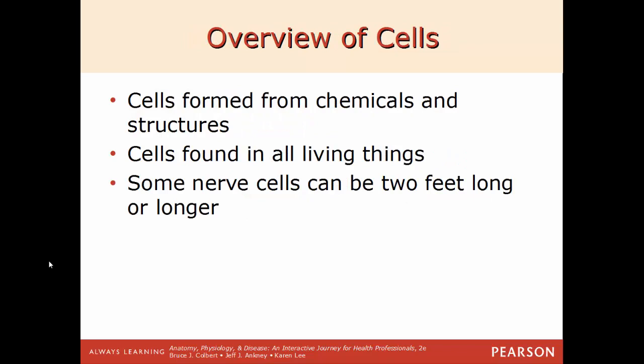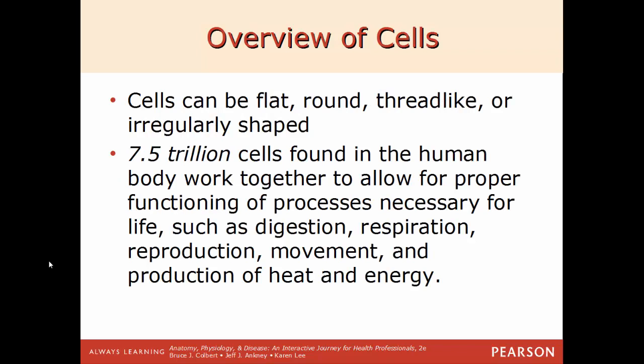Cells are found in all living things. A key characteristic of living structures is that they are made up of cells, and cells are formed from chemicals and other structures found inside. All cells vary greatly in size and shape. Some nerve cells can be over two feet long and are actually visible with the human eye. Cells can be flat, round, thread-like, or very irregular in shape depending on their function. There are roughly seven and a half trillion cells in the human body, an approximation since cells are constantly dying, dividing, and reproducing.